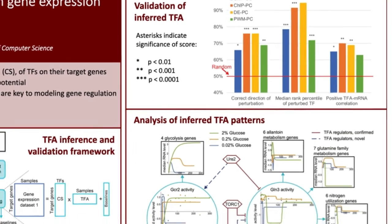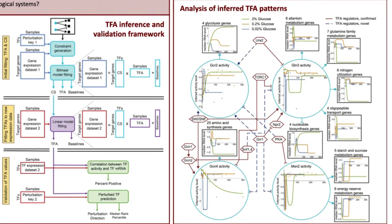These two networks were then used to infer activity in new gene expression data sets, such as gene expression data sets where yeast cells were introduced to new growth medium with varying glucose concentrations, as well as gene expression data sets where genes other than transcription factors were perturbed. The activity patterns inferred from these gene expression data sets were then used to create this small regulatory system. Plotted within the cyan circles are inferred transcription factor activity levels from 0 to 300 minutes across three different glucose concentrations.